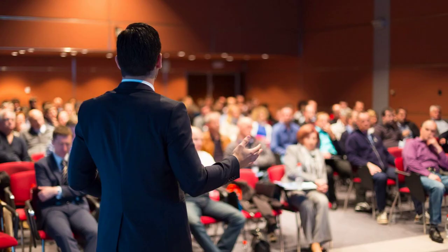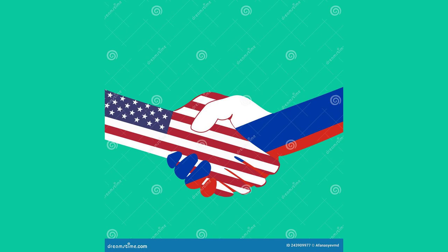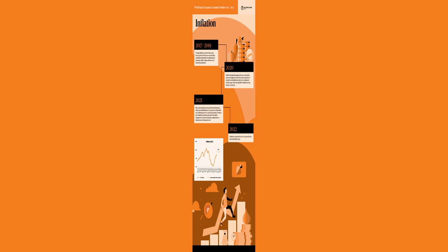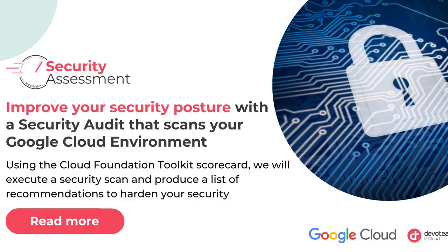Out of this historic conference emerged the International Monetary Fund. The IMF was designed to serve as a forum for member countries to discuss economic policies, provide financial assistance to nations in need, and promote exchange rate stability. Its founders believed that by fostering economic cooperation and providing financial resources, they could prevent future economic crises and promote global prosperity. One of the IMF's primary functions is to monitor the economic health of its member countries. Through regular assessments known as Article IV consultations, the IMF evaluates each nation's economic policies, fiscal health, and exchange rate stability. These assessments help identify potential vulnerabilities and provide recommendations for policy adjustments to maintain stability.